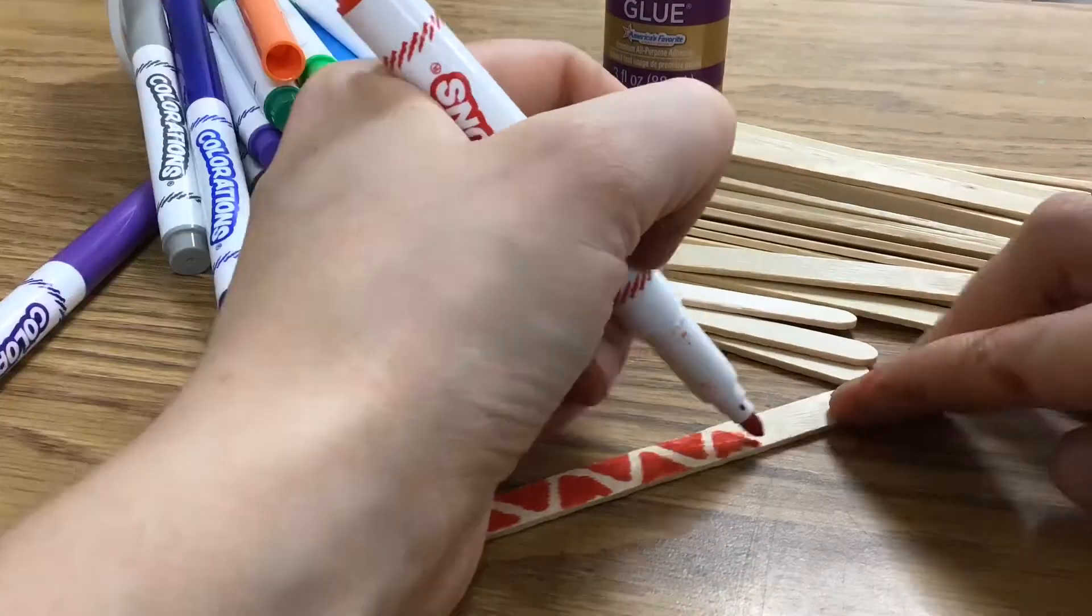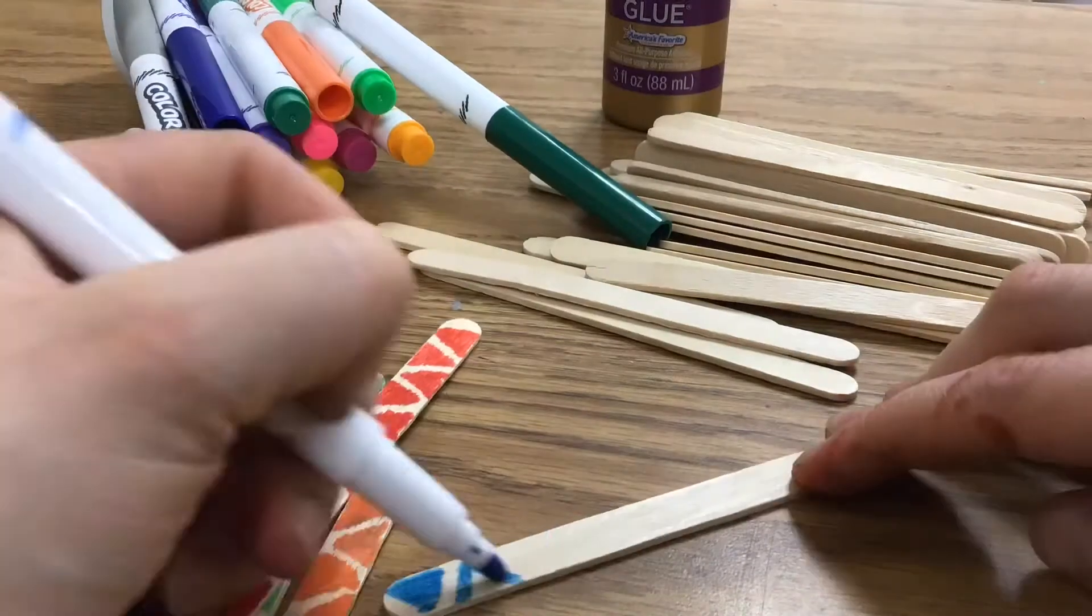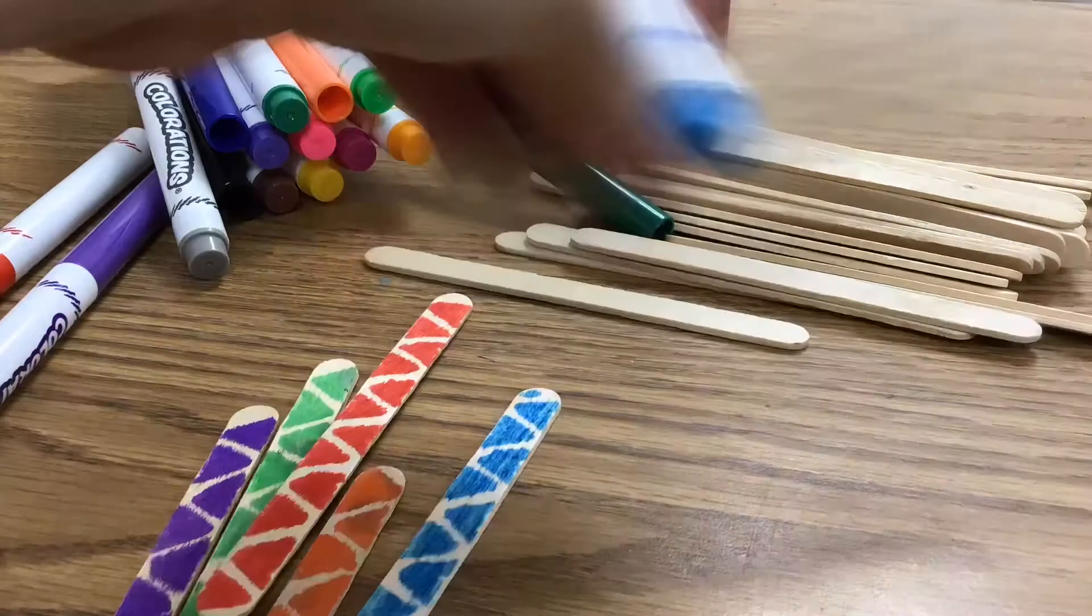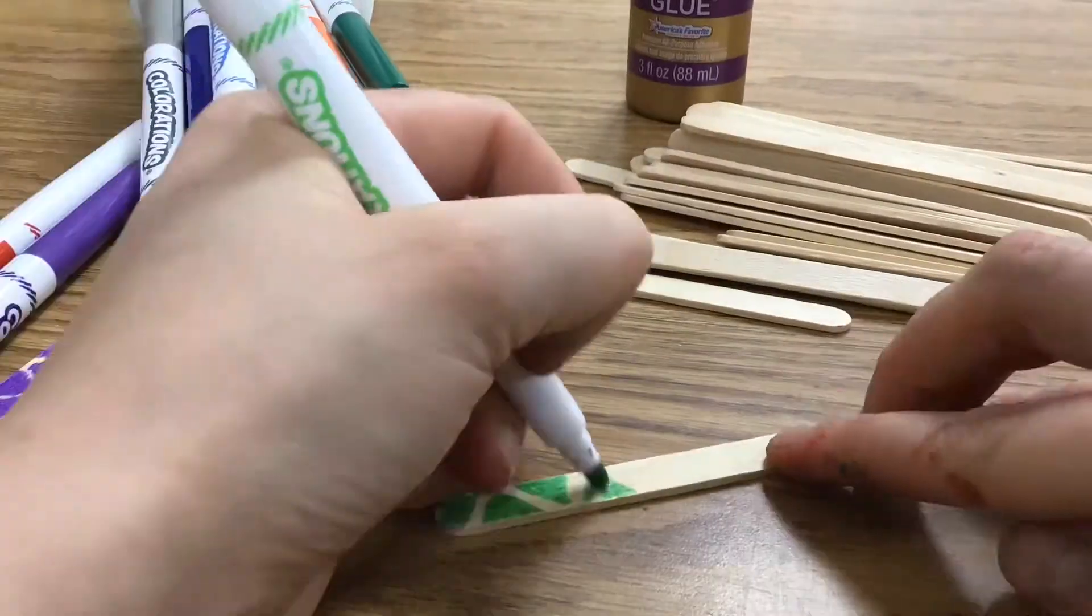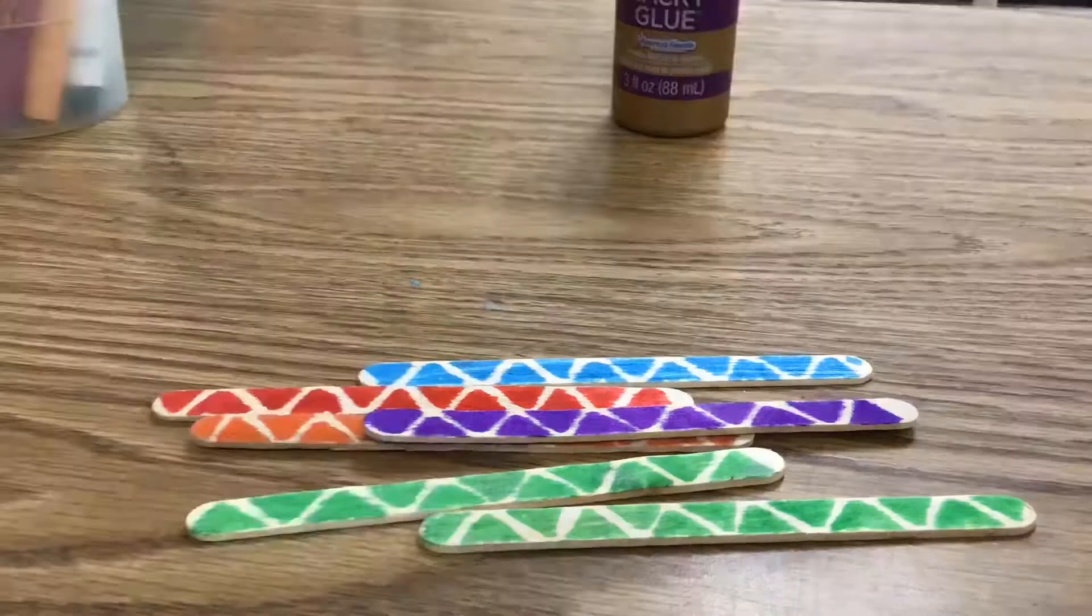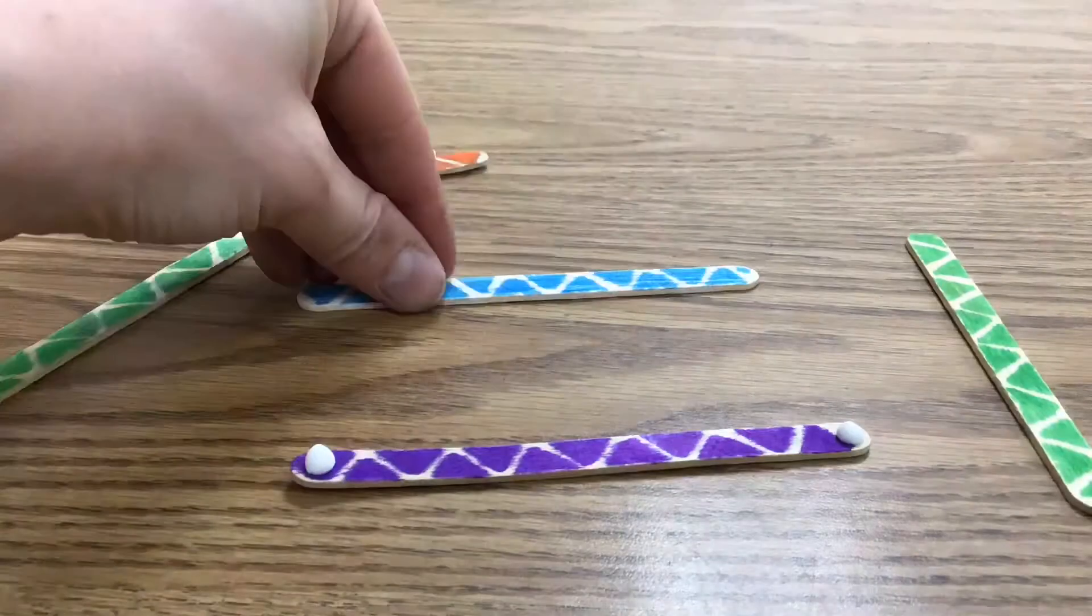I'm doing this triangle pattern because I want mine to look sort of like a dinosaur or a monster, so I'm giving it a scaly design. After you've colored your sticks, you're going to glue them together.